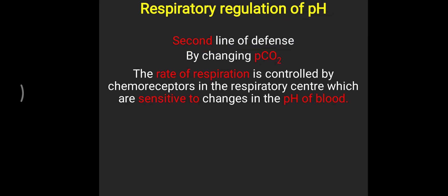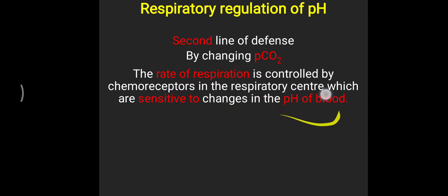Whenever pH initially changes, the first line of defense — the buffer system — will work. But if it is not controlled with the help of buffers, then the second line of defense will be activated, which is respiratory regulation. Respiratory regulation works with the help of partial pressure of carbon dioxide. This carbon dioxide affects our chemoreceptors. The rate of respiration is controlled by chemoreceptors in the respiratory center, which are very sensitive to changes in blood pH, and that will lead to changes in our respiratory rate.